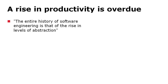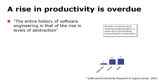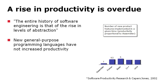Basically, the whole history of software engineering deals with raising the level of abstraction. This happened 40 years ago, very dramatically, when we moved from Assembler to 3GL languages. After that, newer programming languages have very little increased productivity.